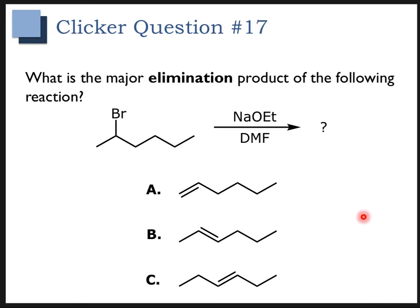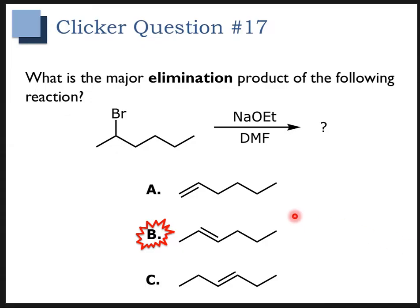Try to identify the major product of this reaction. Hopefully you correctly identified B. There are two beta hydrogens that can be pulled off. If you pull off the hydrogen on the first carbon indicated, that gives you A. If you pull the beta hydrogen off the other carbon indicated, that gives you B. A is the least substituted, so B is going to be the major product.